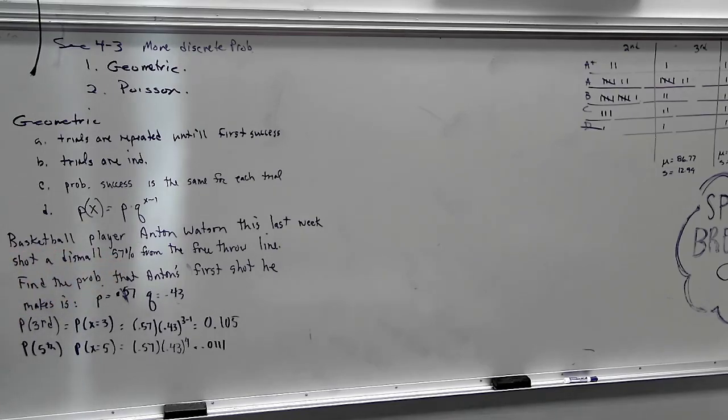Now, could I do questions like this? I could word it that. What's the probability that his first shot he makes is before his third shot? Well, I would show that like this. What's the probability that the first shot he makes is before his third shot? So you would have to find the probability of one, the probability of two, and then do what with those answers? Add them up.